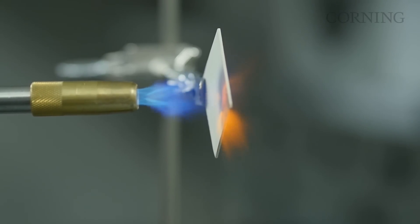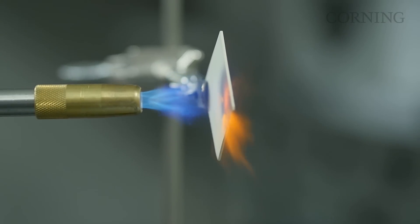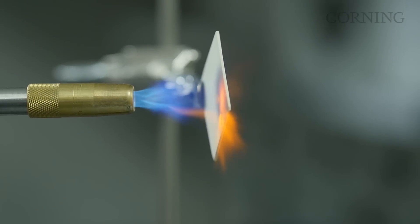So you can see that one side of it is glowing hot, the other side is basically at room temperature and it doesn't break because of the low thermal expansion.